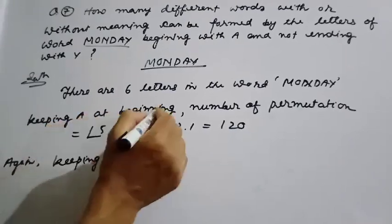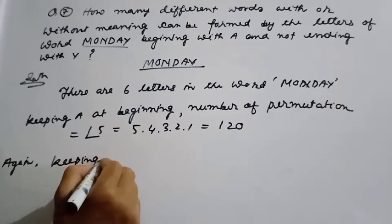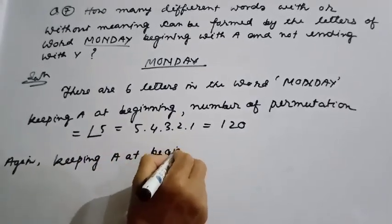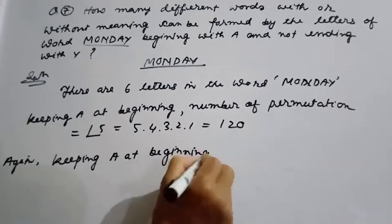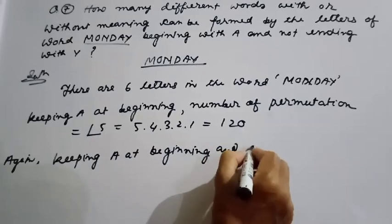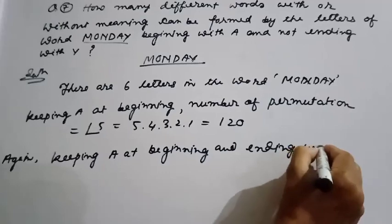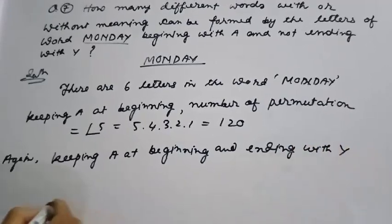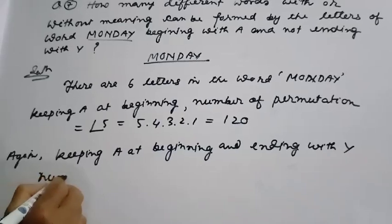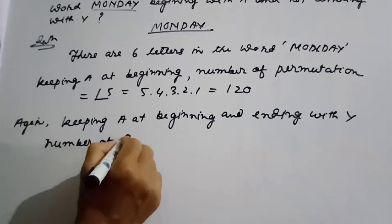Again, keeping A at the beginning and ending with Y — what is the number of permutations?